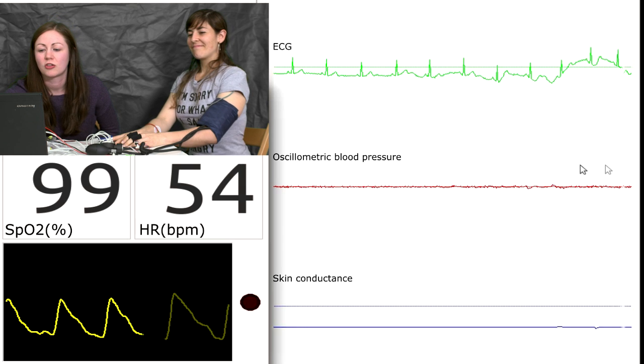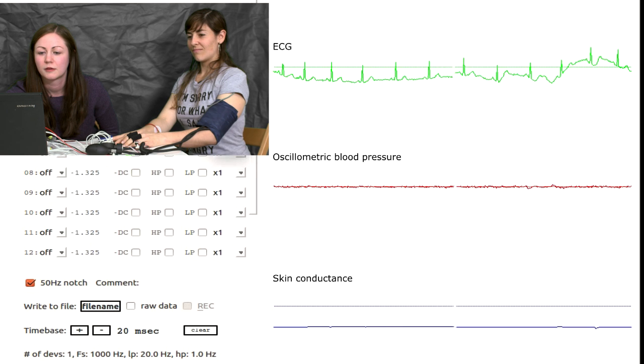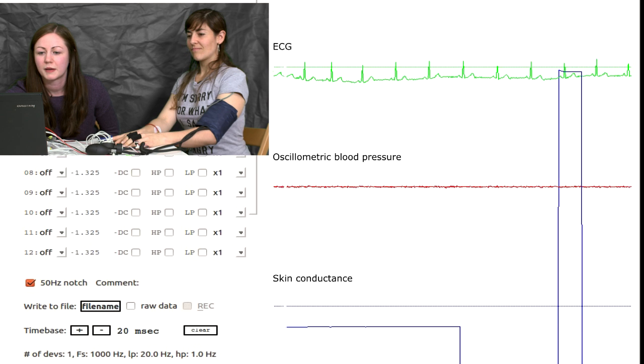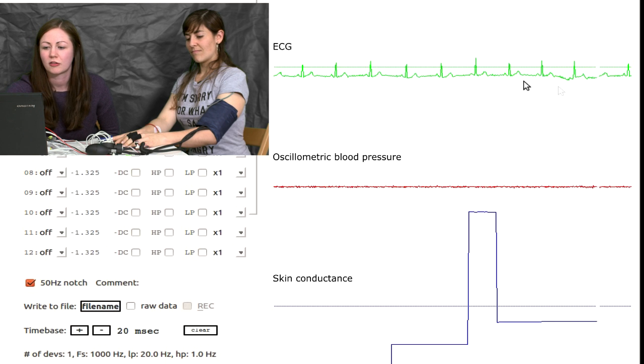So I'm just going to change our amplitudes just so we can see them more clearly. So I'll put the one up to 50 for the skin conductance. That's a bit high. So I'll just take it down to 20. There we go.